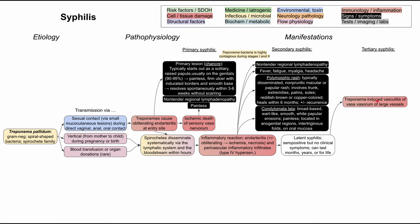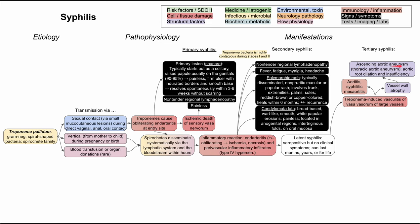First, the bacteria can induce a vasculitis of the vasa vasorum of the large vessels. This can result in an aortitis or a syphilitic meso-aortitis, and also result in vessel wall atrophy. This weakens the vessel walls and allows them to dilate, resulting in aneurysms — specifically ascending aortic aneurysms, which are thoracic aneurysms — as well as aortic root dilation and insufficiency. So syphilis can start to affect the heart in this way.